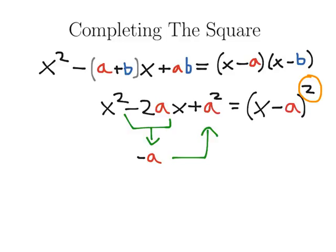So it's really easy to recognize a square quadratic. You just take the number being multiplied by x, divide it by 2, and square it. If that's not your constant, you don't have a square.